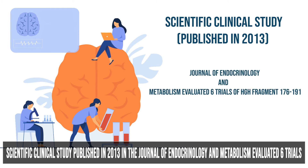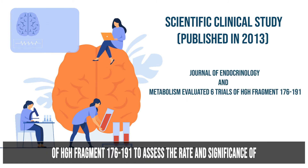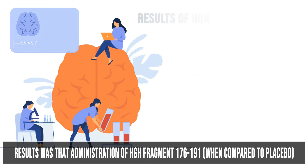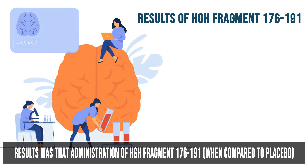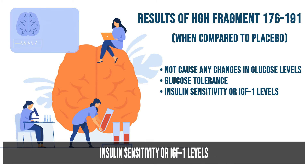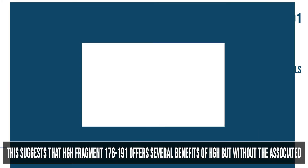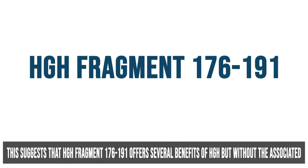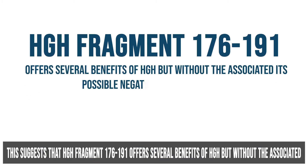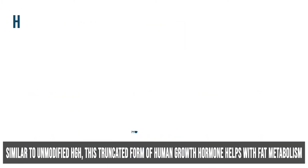A scientific clinical study published in 2013 in the Journal of Endocrinology and Metabolism evaluated six trials of HGH Fragment 176-191 to assess the rate and significance of possible negative effects. The result was that administration of HGH Fragment 176-191 compared to placebo did not cause any changes in glucose levels, glucose tolerance, insulin sensitivity, or IGF-1 levels. This suggests that HGH Fragment 176-191 offers several benefits of HGH but without its possible negative side effects.